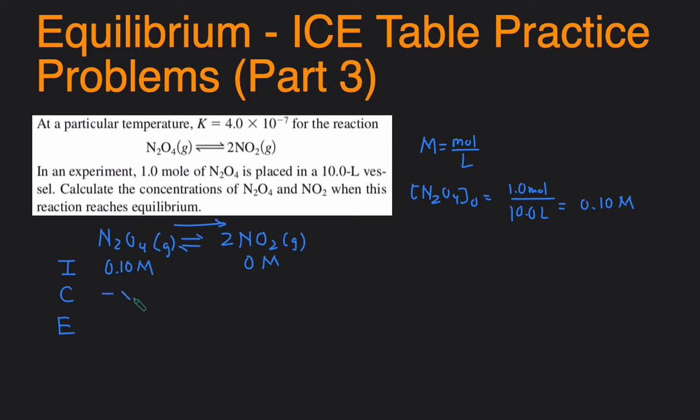And so then this will be minus x, and this will be plus 2x because of the coefficient 2. The E line is just the sum of the I and C line, 0.10 minus x and 2x.